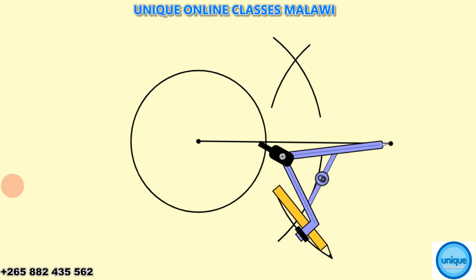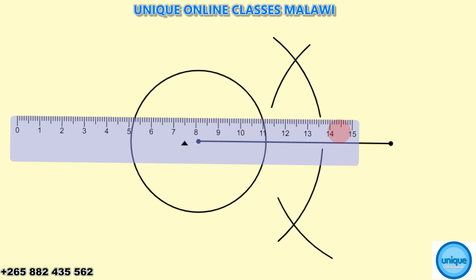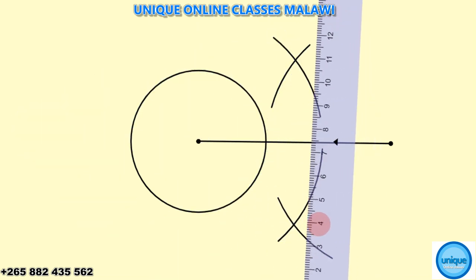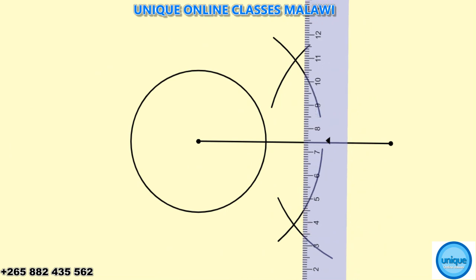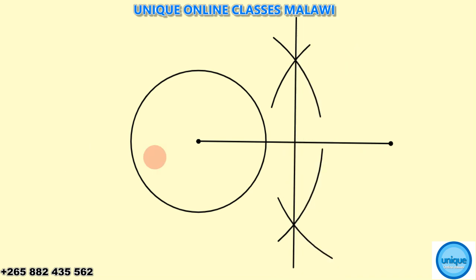I need to bisect that line, so I need a ruler which I'm going to use to join the points where the arcs meet. Let me join this point, something like that. I've drawn the bisector.